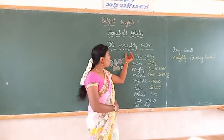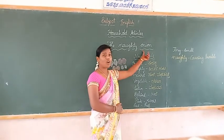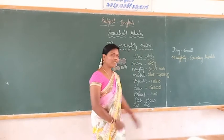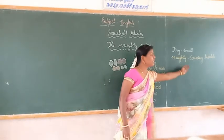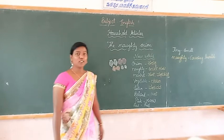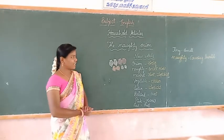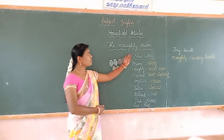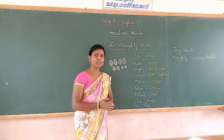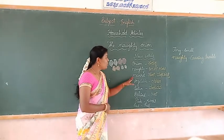Onion — The Naughty Onion. What is the meaning of 'naughty'? Naughty means causing trouble — 'Kitalet,' 'Tunta' — this is called naughty in English. And onion means 'Irulli.'